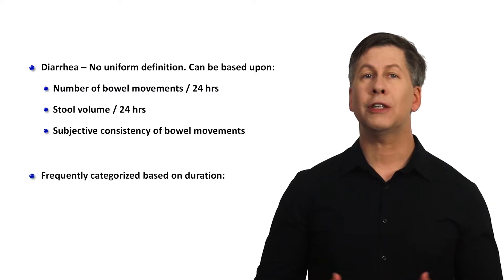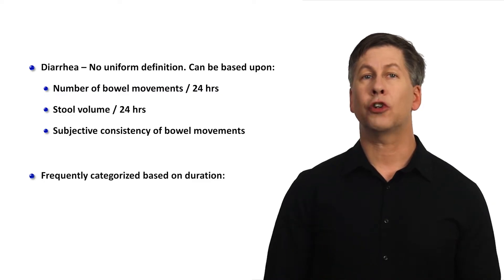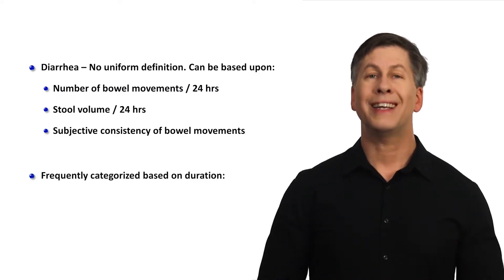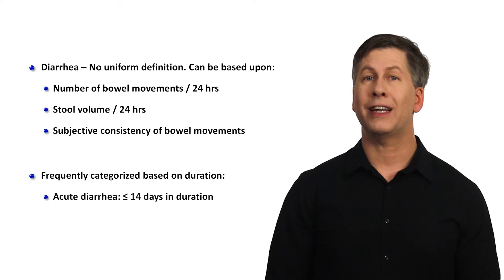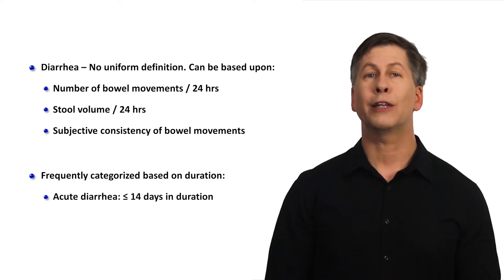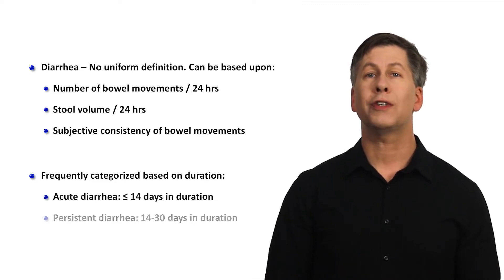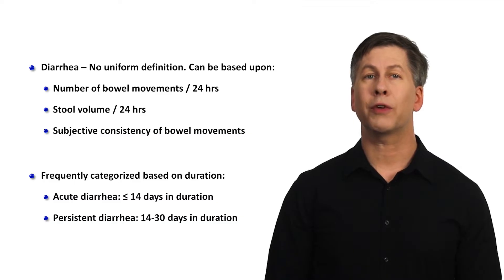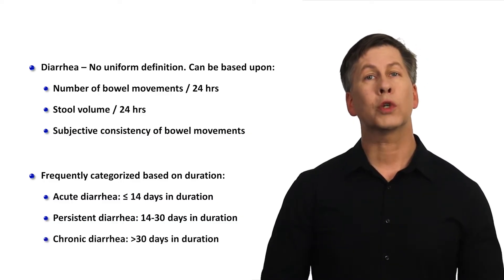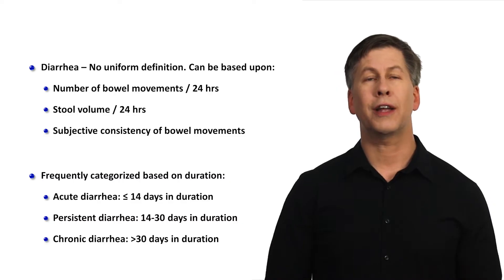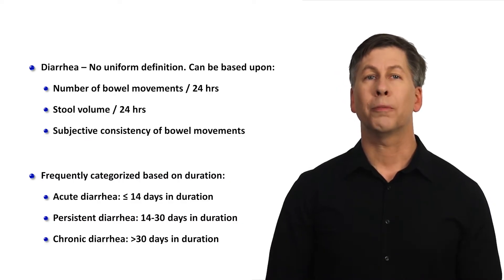The categorization of diarrhea based on duration is more uniform. If it's been occurring for 14 days or less, it's referred to as acute diarrhea. 14 to 30 days is persistent diarrhea. And diarrhea that's been ongoing for over 30 days, or sometimes listed as 4 weeks, is chronic.